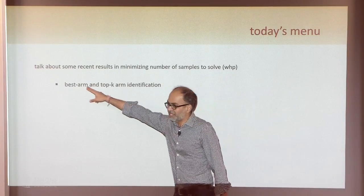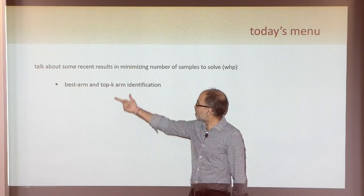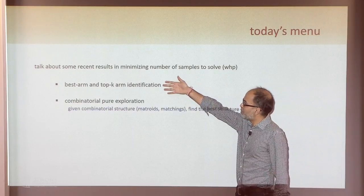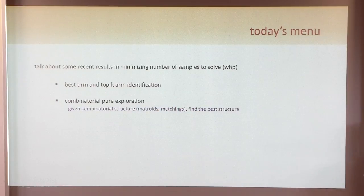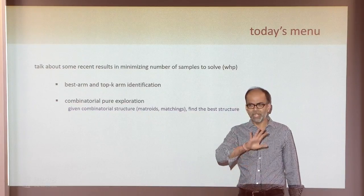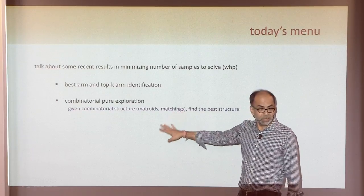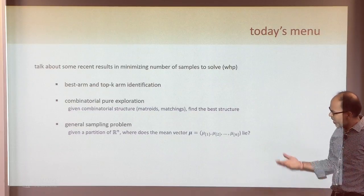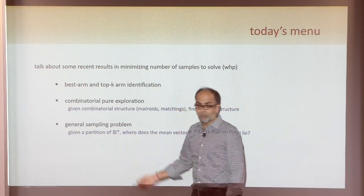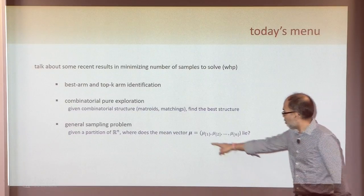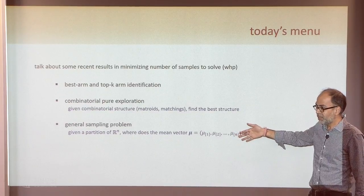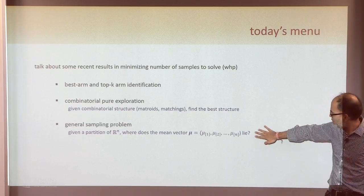This is old stuff: best arm identification, just this multi-armed bandit thing; best top-K arms — find the best 20 arms. This is prior work. What we were looking at is the combinatorial problem: given some combinatorial structure, I want to find — wherever you see matroids, just replace with spanning trees and you'll be very happy. Matchings: find the max weight matching. And then a fairly general problem which I probably won't get to. I'll give you a partition of R^n and I want to figure out in which part the mean vector lies. There's a nice open problem here, and I'll end with that.